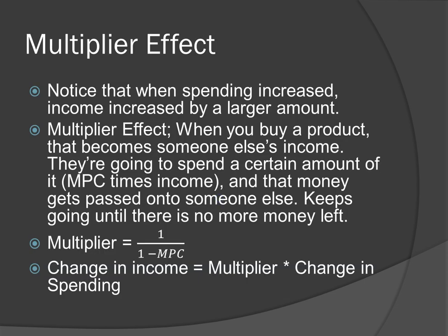The next topic is called the multiplier effect. Notice on the consumption function that the slope is really small, meaning a small change in spending can lead to a huge change in income. The answer lies in the MPC, or the marginal propensity to consume. When you buy something, that money goes to someone else and becomes their income. They'll spend a portion of it based on their MPC, and the money gets transferred to someone else, and this keeps occurring until no more money is left. So for every $1 increase in spending, there will be a much larger increase in income. The multiplier equals 1 divided by (1 minus the marginal propensity to consume), and the change in income equals the multiplier times the change in spending. If the multiplier is 5, then for every $1 change in spending, income will change by $5.